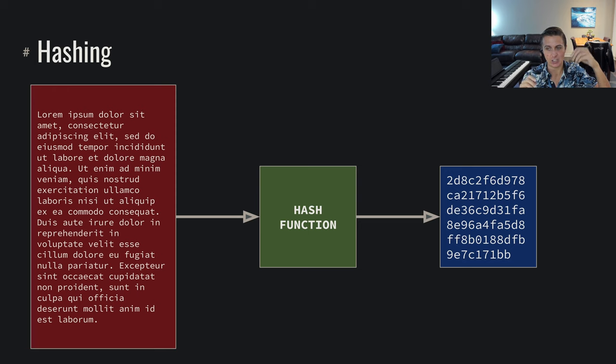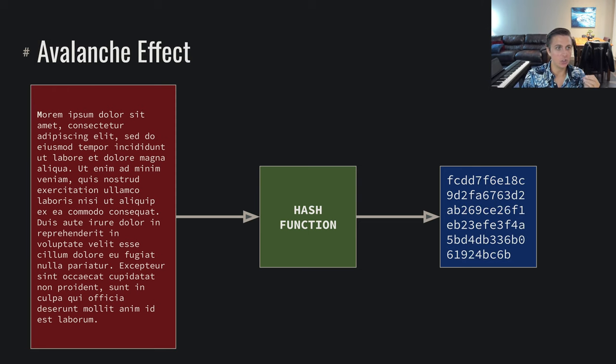Hashes through this hash function always produce the same size thing. And as we'll see here, if we just slightly change our hash data, the hash value dramatically changes. There's this avalanche effect. So if we change from lorem ipsum to morum ipsum and we hash that, our two hashes are dramatically different. There's this avalanche effect in which everything just dramatically changes going through this hash function.